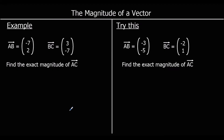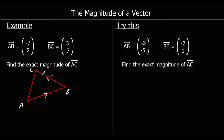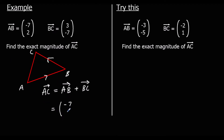Here's another example. We've been given A to B and B to C, and we need to find the exact magnitude of A to C. Firstly we have to work out what A to C is, and then we'll find the magnitude using Pythagoras. We can find A to C by thinking of this as a triangle with A, B, and C. A to C is the same as A to B plus B to C — going from A to B and then from B to C is the same as going from A to C. When we add vectors we add the x changes together and add the y changes together.